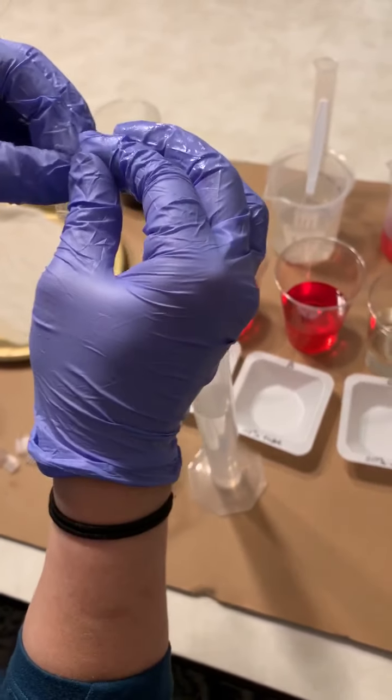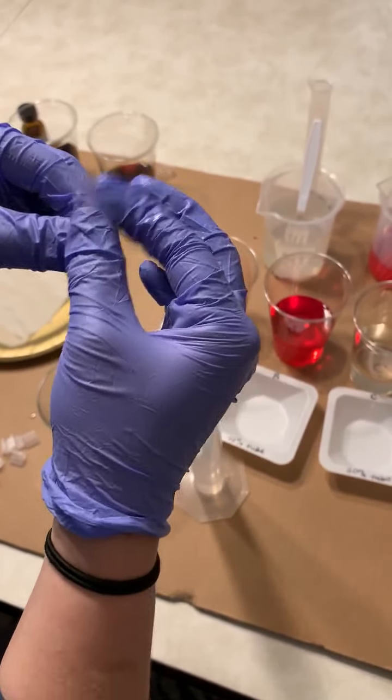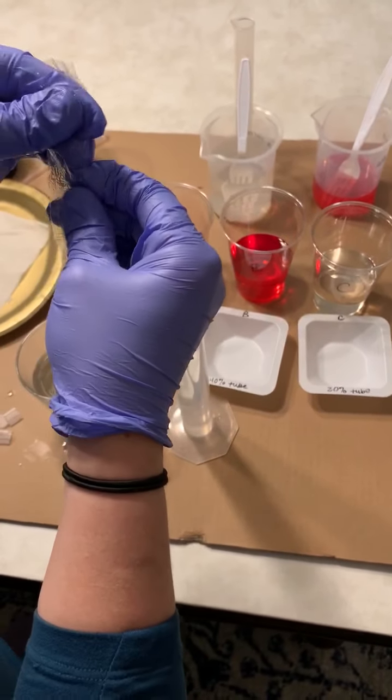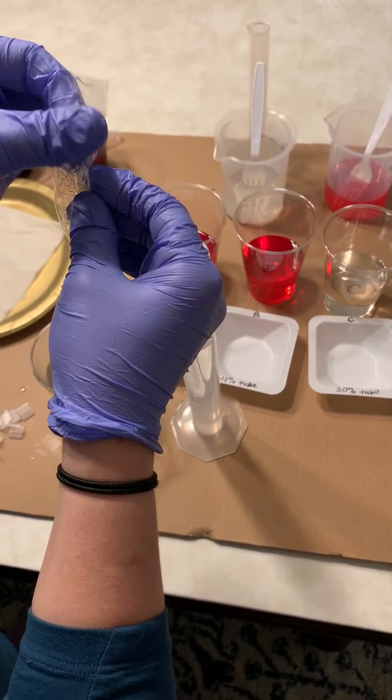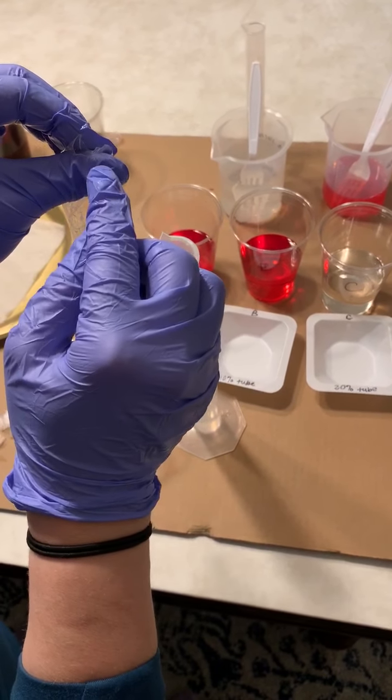So if your tube ever gets really dry and stuck together, you can always dip it back into the water to make it more wet, and then you can rub your fingers to open the tube back up again. All right, so see this nice opening of my tube?